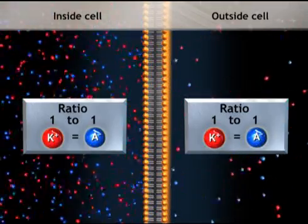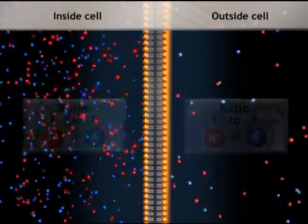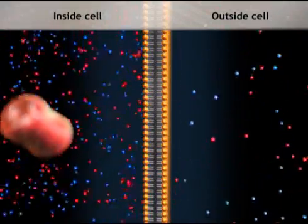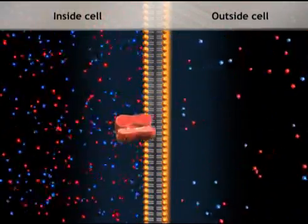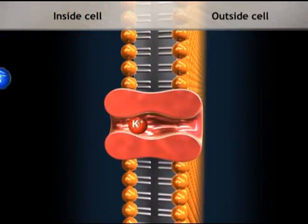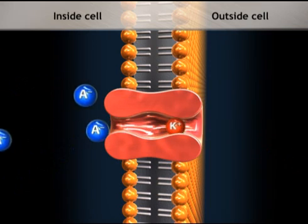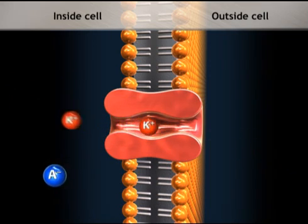The solutions are electrically neutral, so no charge accumulates on the inside or outside of the membrane. Now let's insert a potassium channel into the phospholipid bilayer. This channel allows potassium ions to diffuse down the steep concentration gradient. The corresponding anion does not fit through the potassium channel and is left behind.